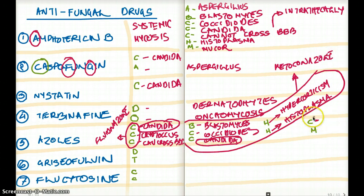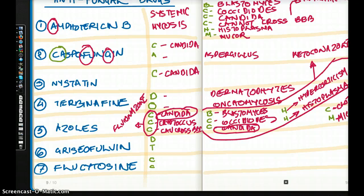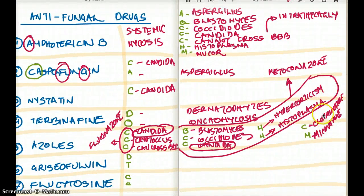And clotrimazole - the C is for clotrimazole and miconazole. So clotrimazole and miconazole, these are the two which we are going to be using for topical infections.